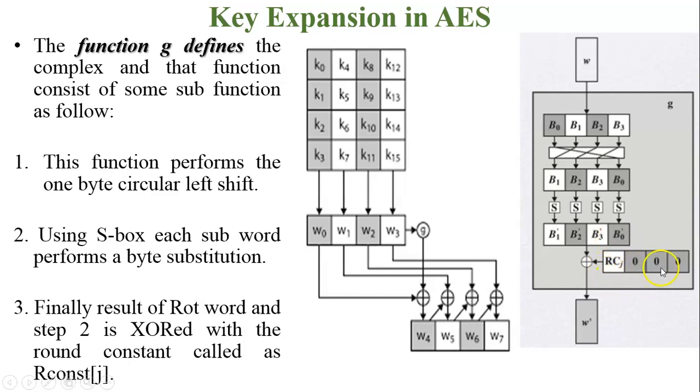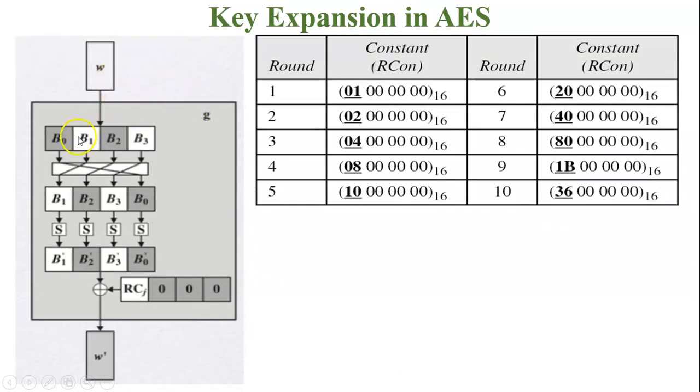In round constant, the last three bits are always zero and the most significant bit changes in every round. We have discussed there are 11 rounds. In this figure, this is the g function. In first round, rcj value is 01. This is second, third, fourth, fifth, sixth, seventh, eighth, ninth and tenth round. In pre-round, before the start of the first round, add round key is used during the plaintext. At that time the value of rcj is 0.